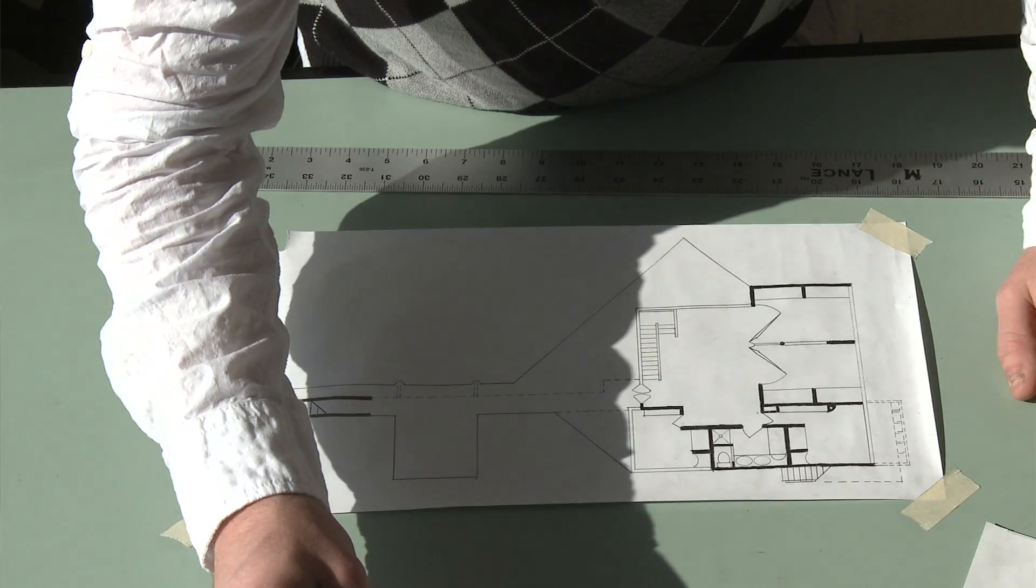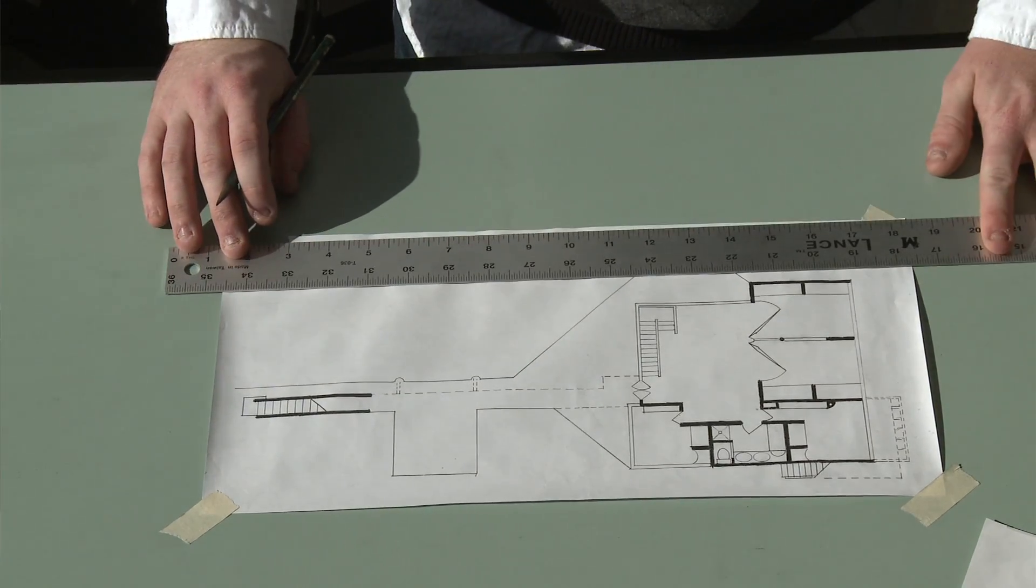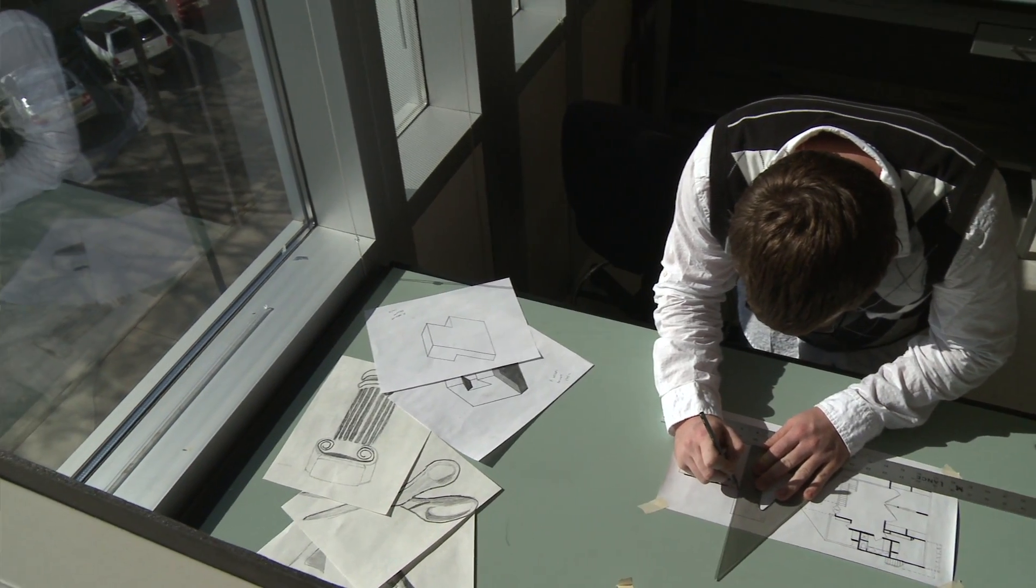You can't just pick one wall to work on, make the wall a certain height and a certain length and a certain width. You actually have to incorporate that wall with the rest of the building.